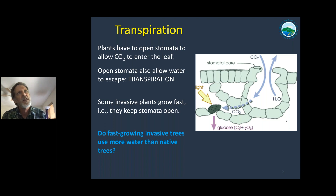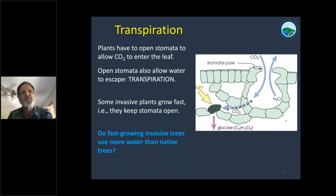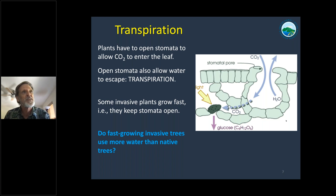We know that some invasive species grow faster than most native species, and this may give them an advantage that causes them to be invasive. We suspect that they tend to keep their stomata open more than native plants, or they could have generally more leaf area than native plants, which would have the same effect. So the question is: do fast-growing invasive trees use more water than native trees? We have been trying to answer this question for a long time and do have some answers, but we really don't have the complete answer yet.